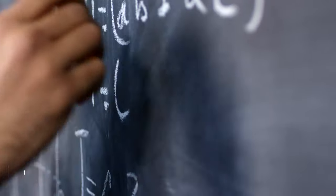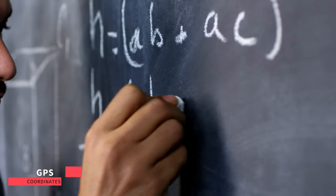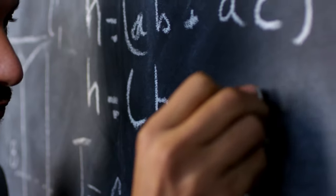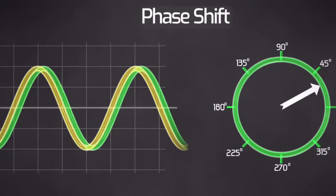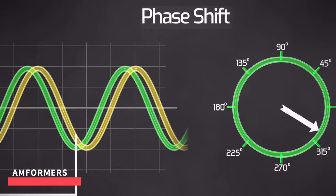Dishy's software calculates the precise angle needed to aim the beam using GPS coordinates and information about the satellite's orbital position. Each antenna's phase shift is coordinated by beam formers and front-end modules. These calculations are continually updated to ensure precise beam direction.